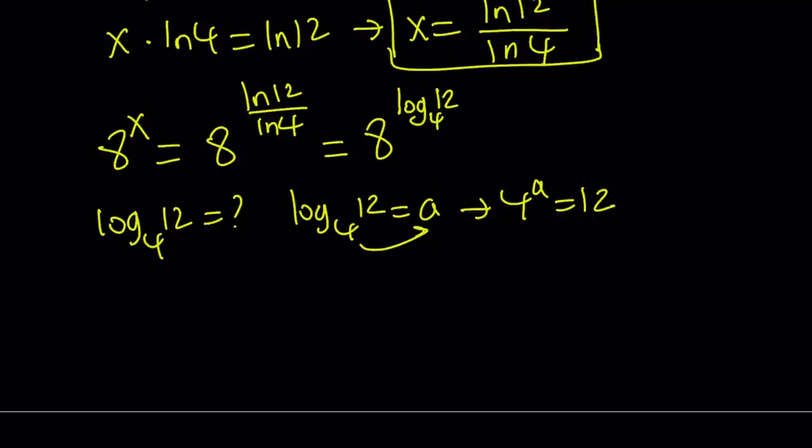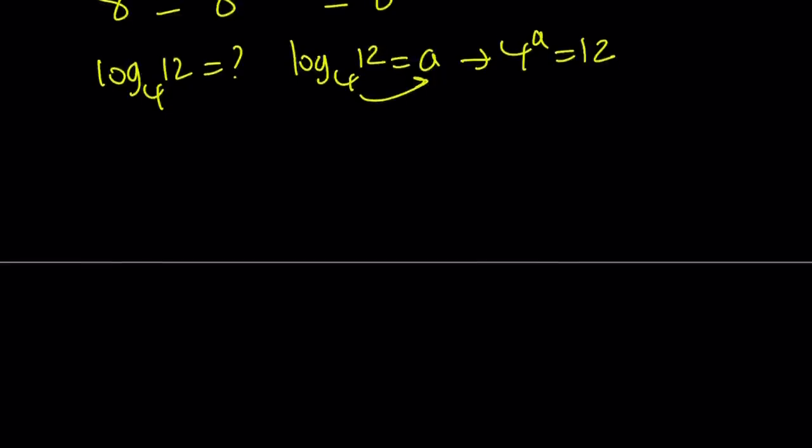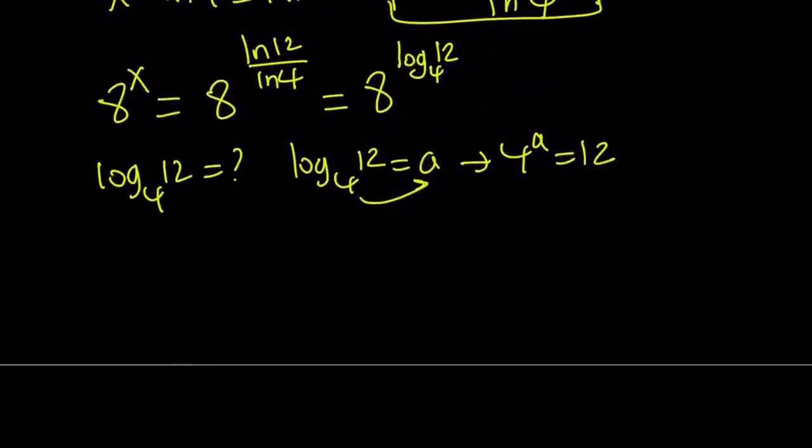Now I'm not going to break down the 12 into 4 times 3 and so on. But I'd like to find the a directly. Actually, I don't need to find a directly because we call this a. So I'm looking for 8 to the power a. In other words, that's what I need. I know 4 to the power a is 12. What is 8 to the power a? How do you find it?